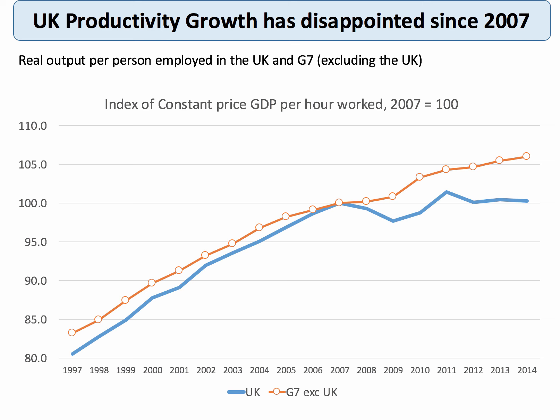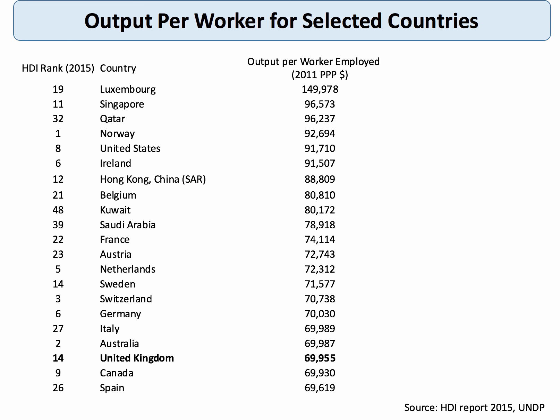This is a major supply side issue for the British economy at the moment. Here's another way of measuring productivity. This is taken from the United Nations Human Development Report for 2015 and shows the level of output per worker for a selection of countries. The data is produced in US dollars and it's adjusted for purchasing power parity. You can see that for this selection of countries, there's a huge difference in output per worker employed, reflecting differences in productivity.